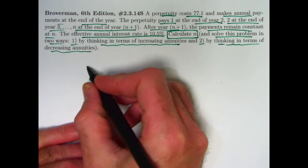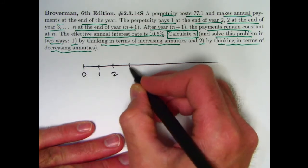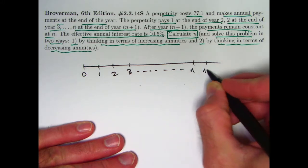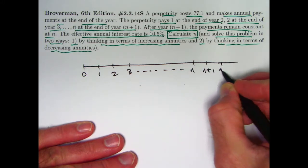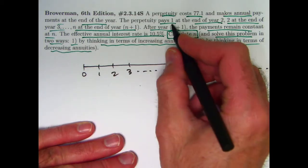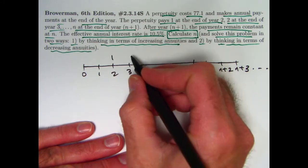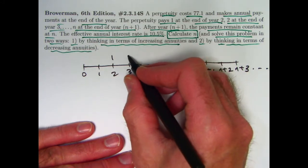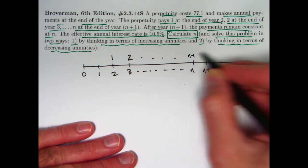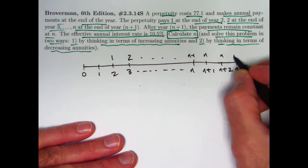Let's draw a timeline. Here's time 0, time 1, these are all one year apart. Time N, time N plus 1, time N plus 2, time N plus 3, etc. The first payment of 1 is at time 2, not time 1. Second payment of 2 is at time 3, etc. The payment at time N is going to be N minus 1. The payment at time N plus 1 is going to be N, and then the payments stay at N forever.